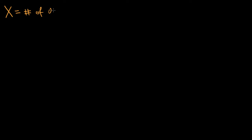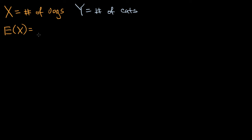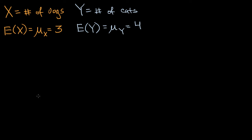Let's say that I have a random variable x, which is equal to the number of dogs that I see in a day, and random variable y is equal to the number of cats that I see in a day. And let's say I also know the mean of each of these random variables — the expected value. So the expected value of x, which I could also denote as the mean of x, let's say I expect to see three dogs a day. Similarly, the expected value of y, which I could also denote as the mean of y, is going to be equal to — just for the sake of argument — let's say I expect to see four cats a day.